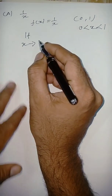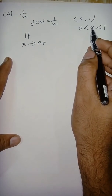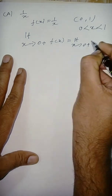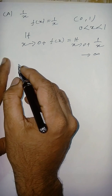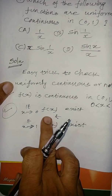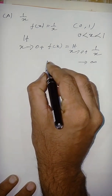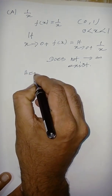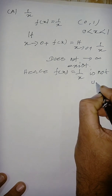Now checking the endpoint: the limit as x tends to 0⁺ of f(x) = 1/x tends to infinity. So the limit does not exist at this endpoint. Hence, f(x) = 1/x is not uniformly continuous on (0,1).